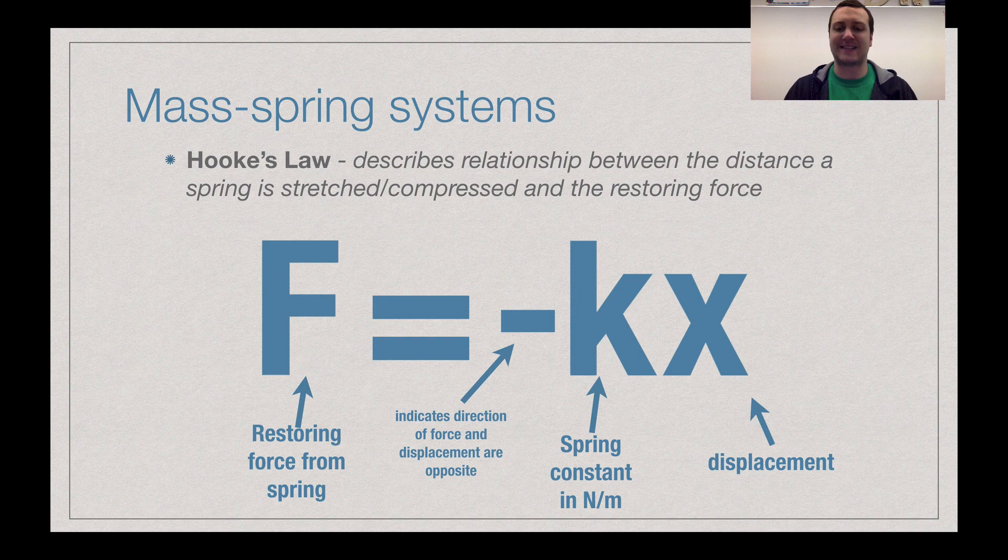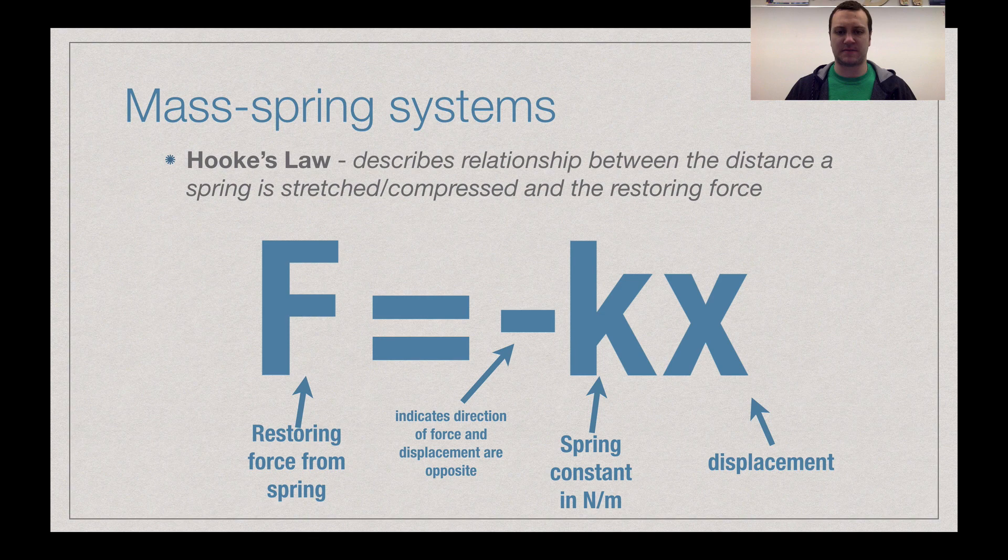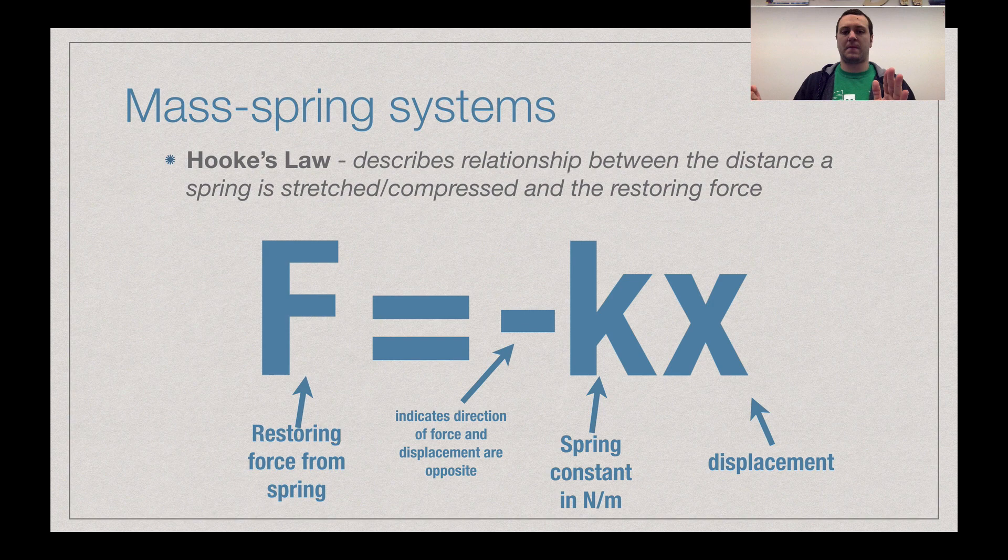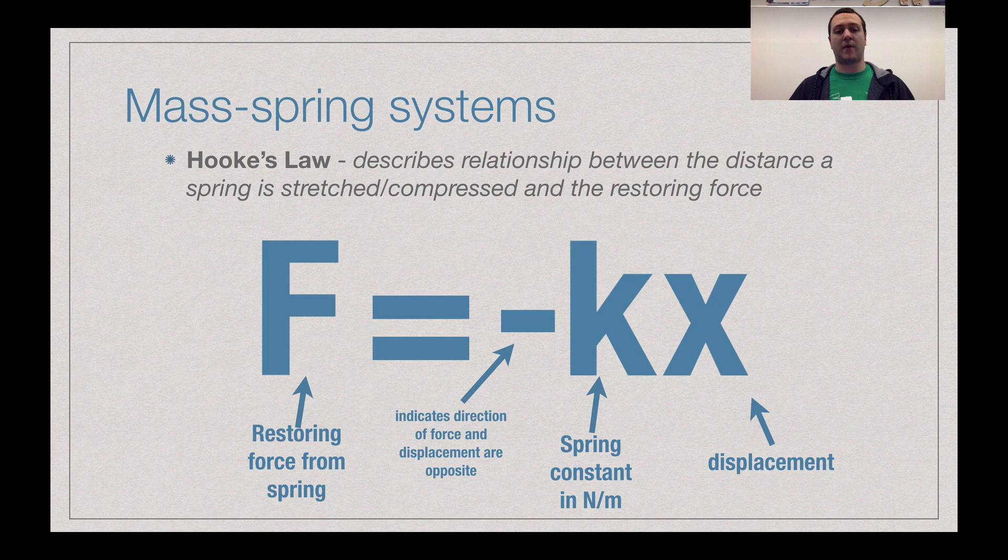Again, that k, our spring constant, cannot be negative. Rather, that negative indicates that the displacement and the restoring force have to be in opposite directions. So if you stretch that spring and you get x is positive, well then, by definition, the restoring force would have to be negative and pulling inward. If you're to define stretching it as a negative displacement, then the restoring force f pointed inward would be positive.